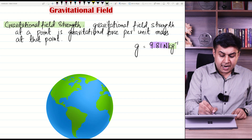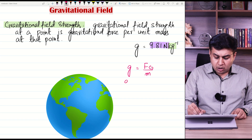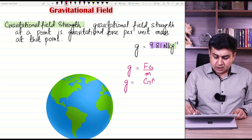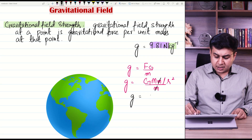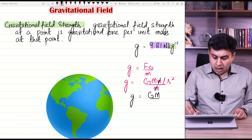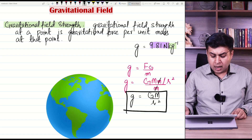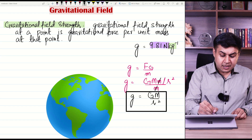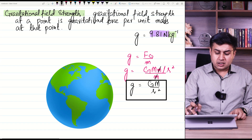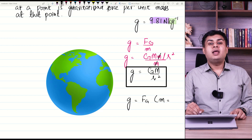Gravitational field strength is equal to gravitational force per unit mass. The formula of gravitational force is GMm/r², and dividing by mass m, the small m cancels out, giving the formula of gravitational field strength as g = GM/r². Gravitational field strength is essentially gravitational force but with the condition that the mass m is equal to 1 kg.